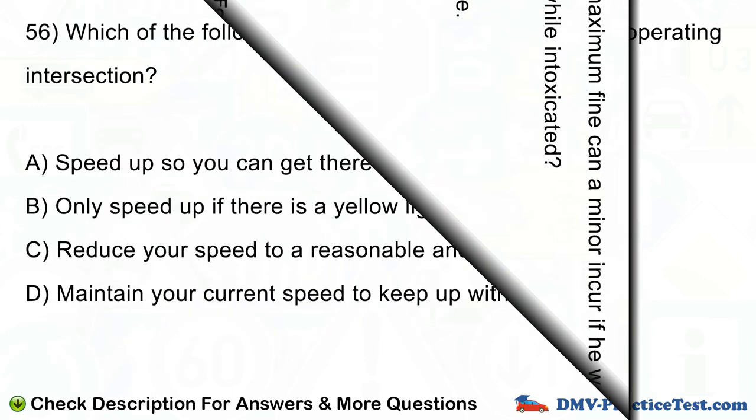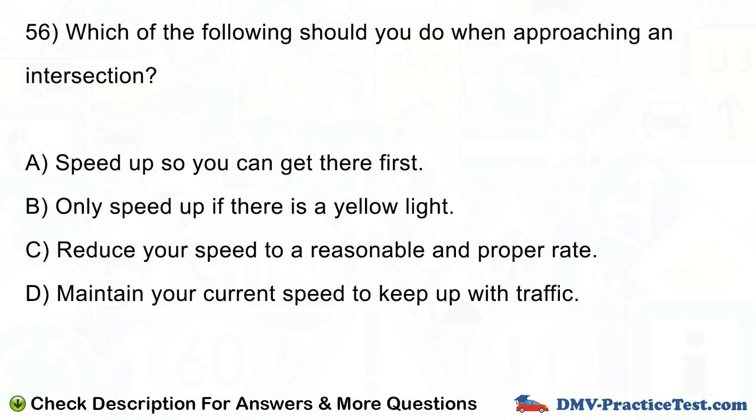Question number 56. Which of the following should you do when approaching an intersection? A. Speed up so you can get there first. B. Only speed up if there is a yellow light. C. Reduce your speed to a reasonable and proper rate. D. Maintain your current speed to keep up with traffic.